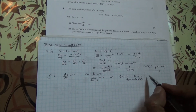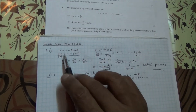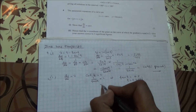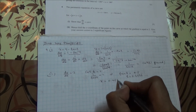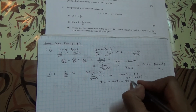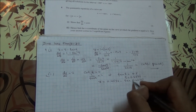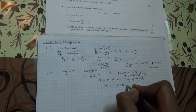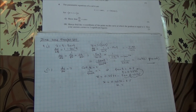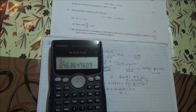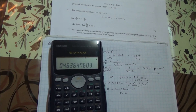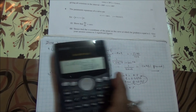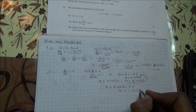Now we need to find the x-coordinate. The x-coordinate is given as x equals t minus tan(t). We found t to be 0.4636, and tan(0.4636) is 0.5. So x equals 0.4636 minus 0.5, which gives us x equals minus 0.0364. So the x-coordinate is minus 0.0364.